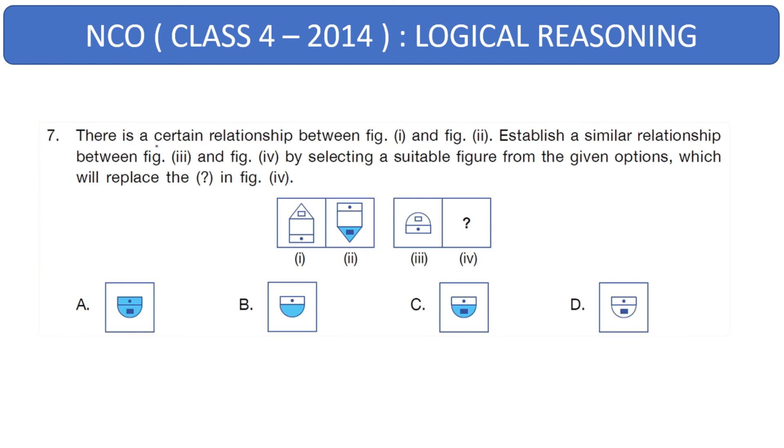Next question. There is a certain relationship between figure 1 and figure 2 given here. Establish a similar relationship between figure 3 and figure 4 by selecting a suitable figure from the given options, which will replace this question mark in figure 4. Let's look at it. Pause the video if you need to. In this combination of figure 1 and figure 2, what is happening is this figure 1 is getting inverted in the figure 2 and only the top portion is colored. Similarly, here, this would be an inversion with only this top portion to be colored, which is done in option C. Hence, that will be your right answer.